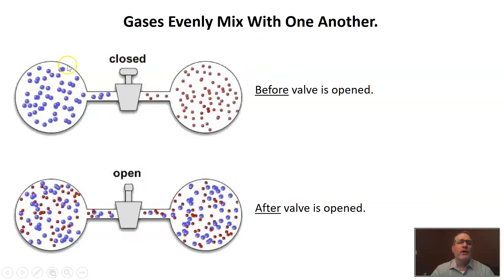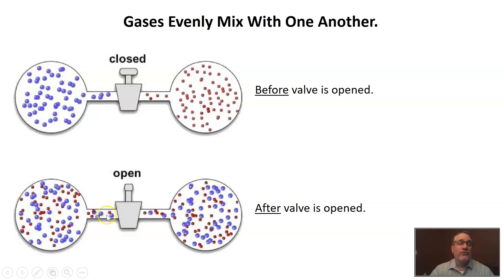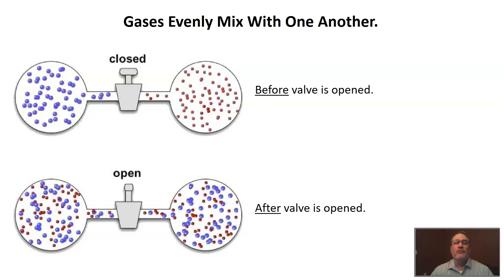This setup has one gas made of blue particles on one side and another gas made of red particles. When we open the pathway — this valve between them — these gases are going to mix together. There is so much energy in these particles; gases bounce around and fly around randomly at very high speeds, over 1,500 miles an hour. This causes them to evenly and randomly mix. If you think about the air around you, it's a mixture of gases — lots of nitrogen, some oxygen, some argon, some carbon dioxide — and all those gases in our atmosphere are mostly evenly mixed.